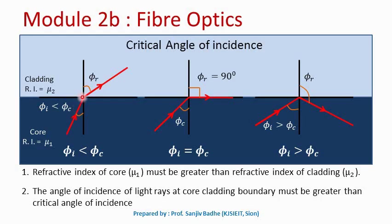Let us make the light ray incident at an angle phi i. So phi i is the angle of incidence at the core-cladding boundary. The angle of refraction phi r will be greater than phi i because the light ray is travelling from denser medium to rarer medium. So angle of refraction phi r will be greater than angle of incidence phi i. If you try to increase the angle of incidence, then the angle of refraction will also increase.